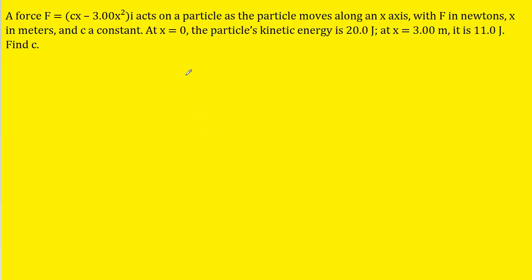We know from the work-kinetic energy theorem that the work done on this particle is equal to the final kinetic energy minus the initial kinetic energy. We also know that the work done by a variable force — and we know this is a variable force because the force depends on the variable x.